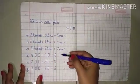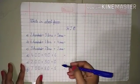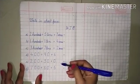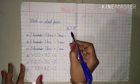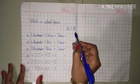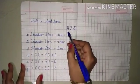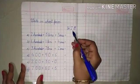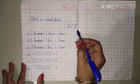Numbers are in expanded form and you have to write the short form. First of all, read this: H, T, O. H stands for hundreds. T stands for tens. And O stands for ones.